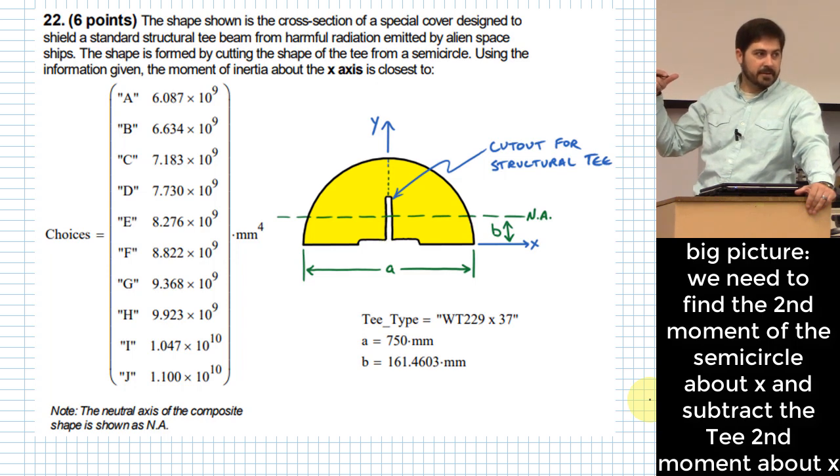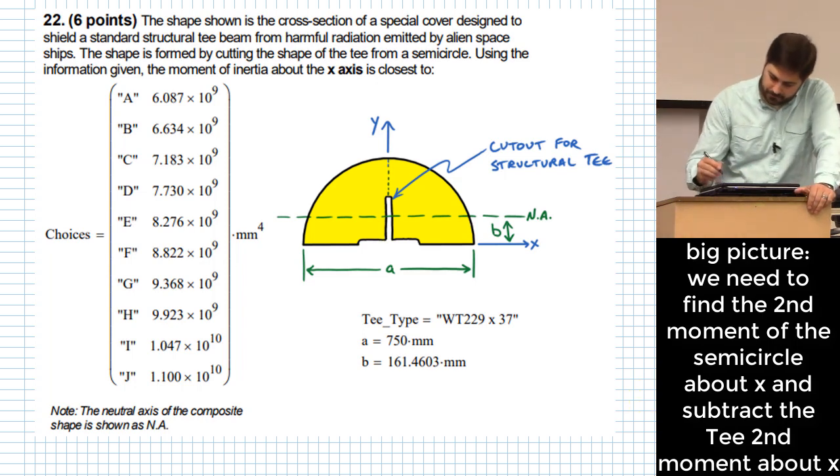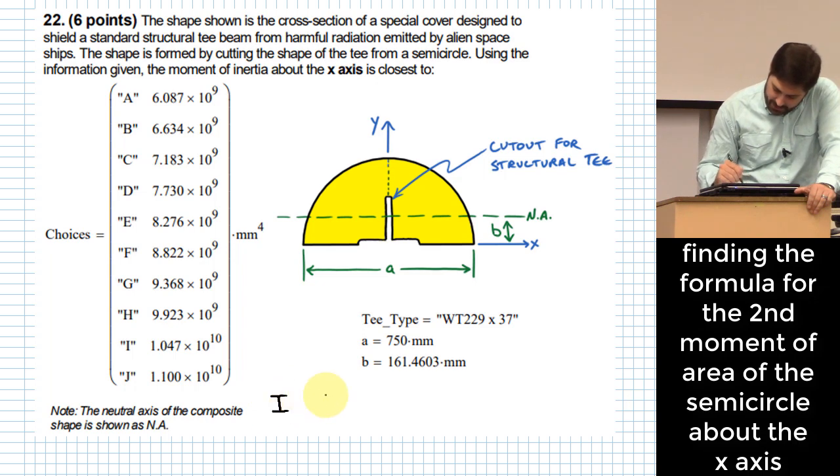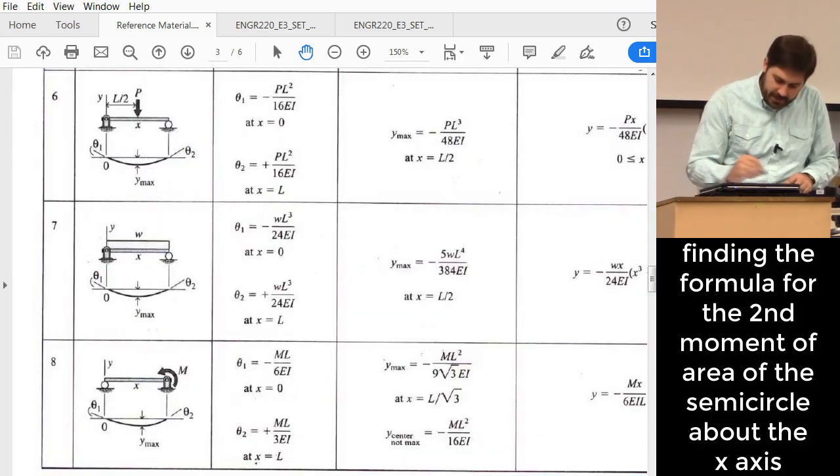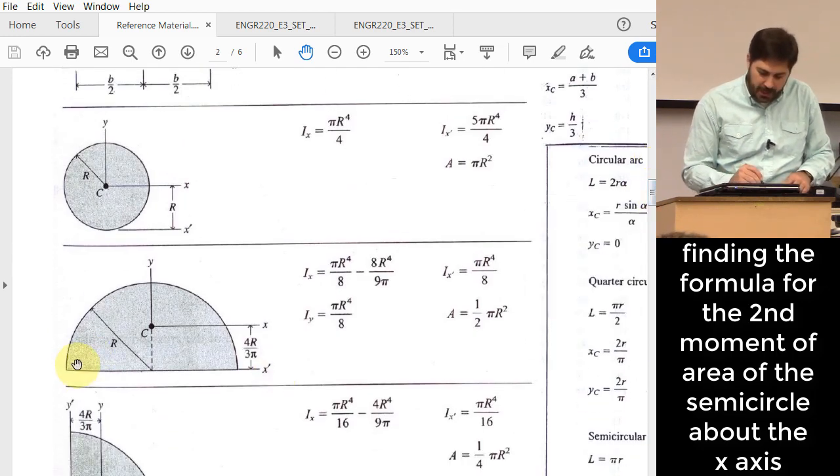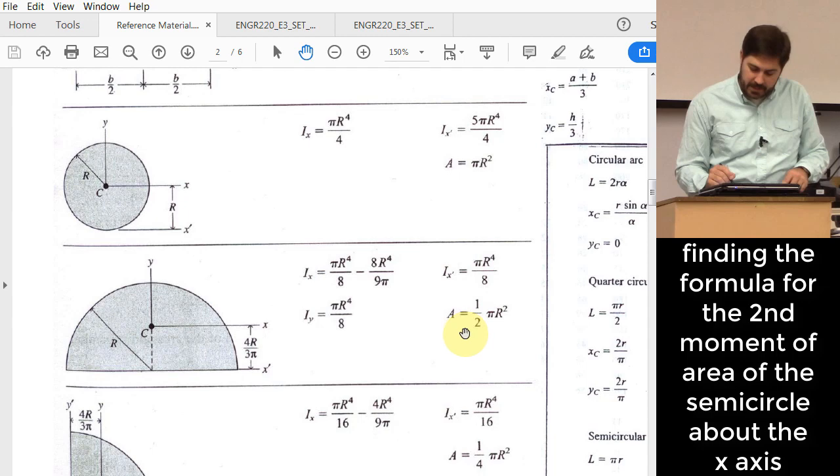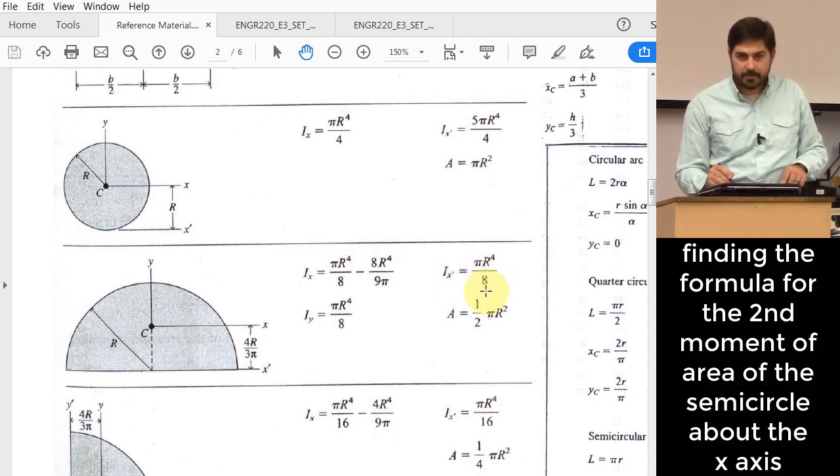What would I do if I wanted to know the second moment of area for the yellow shape without the T cut out? So I for just the semicircle, I'll abbreviate that with SC. We can find that in our reference material, right? One of the options given is about this axis that goes along the bottom of the shape, I x prime, it says pi r to the fourth over eight.